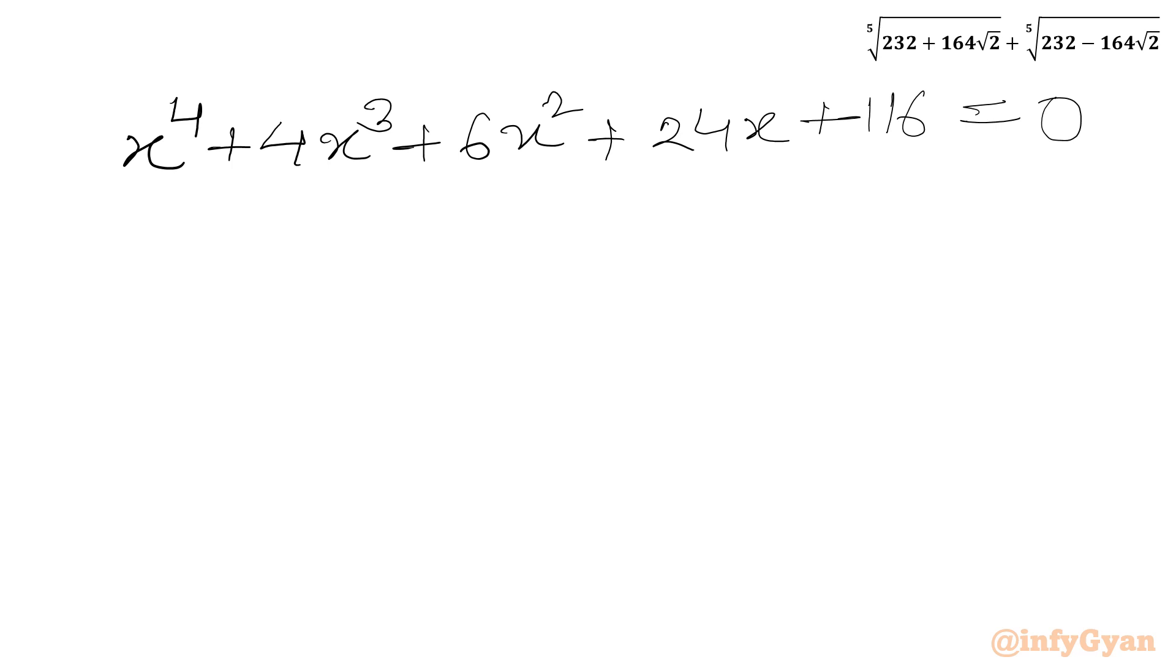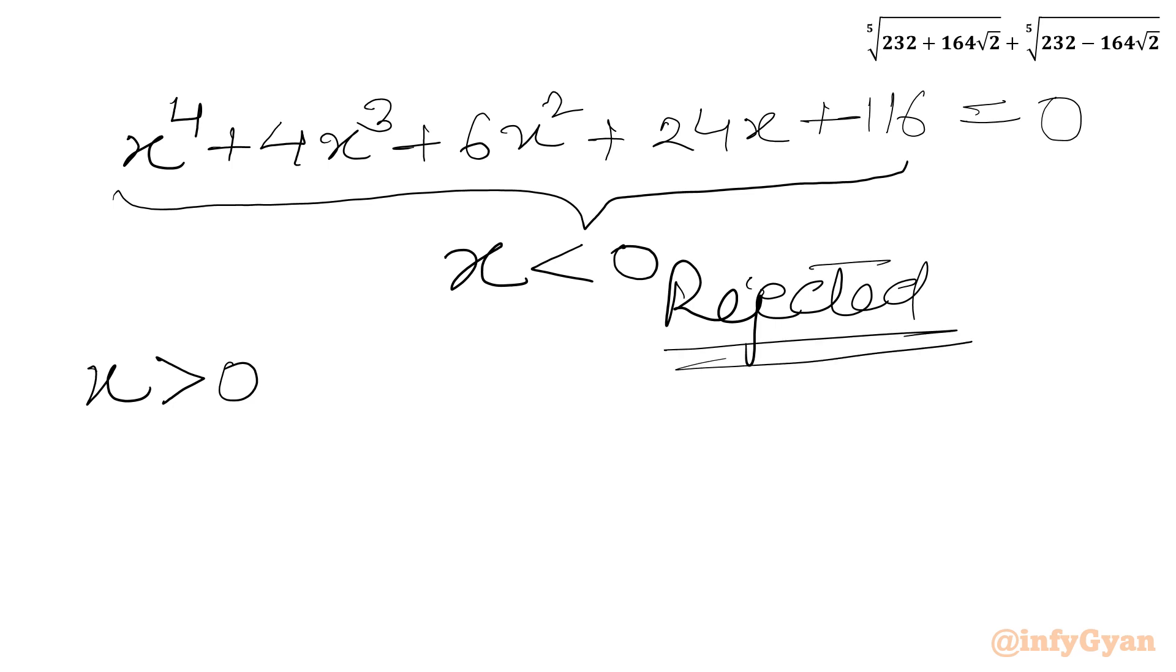So if I will write quintic equation, then I will be writing x to the power 4 plus 4x cube plus 6x square plus 24x plus 116 equal to 0. Here we have all coefficients of this equation are positive. So I can write here for real x, the values which will satisfy this quintic equation will be x negative. And as per condition x was positive, so we will reject this quintic for our solutions. So we are going to accept x equal to 4. So our final answer becomes x equal to 4.